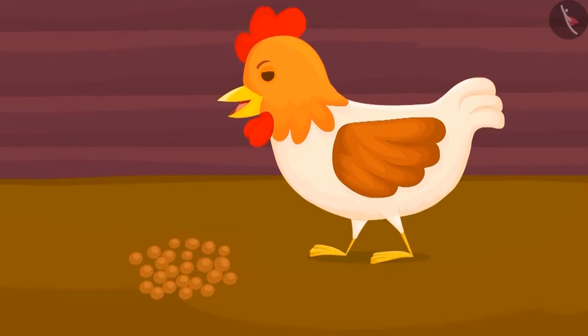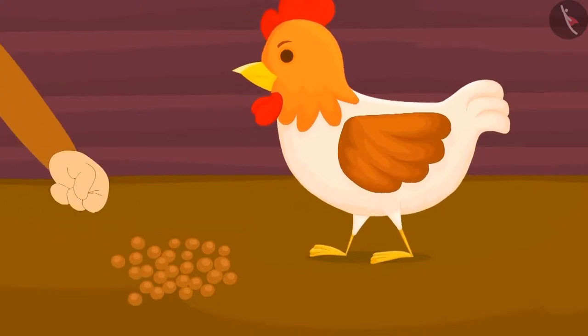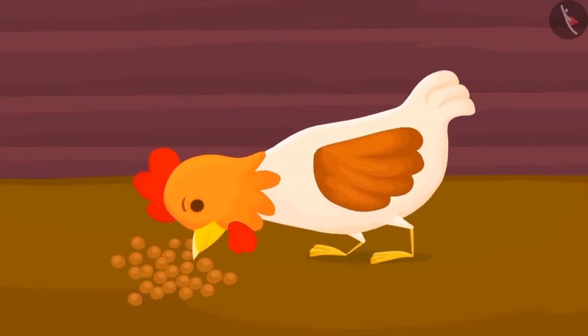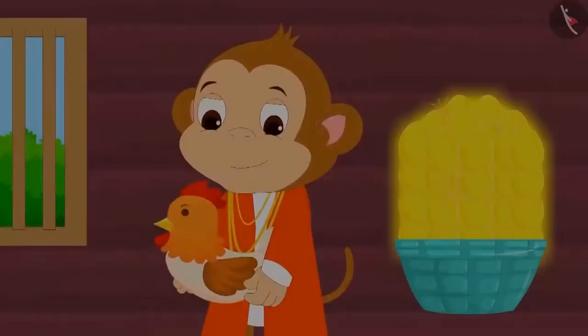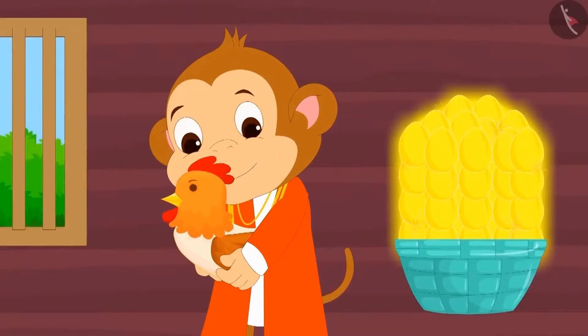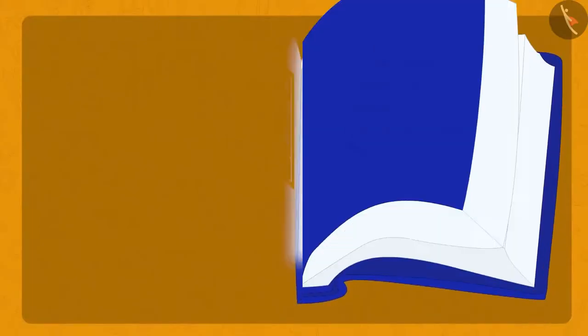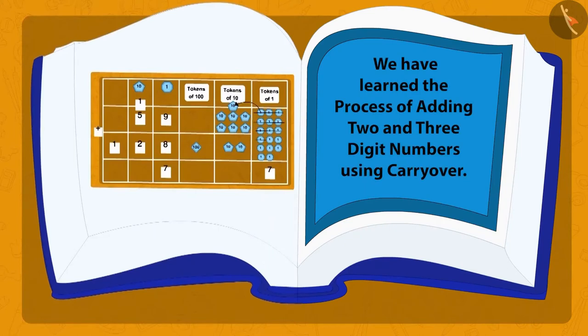Baban now started feeding his hen with fodder. And the hen kept giving him more golden eggs. After all, Baban became the richest man in the village. Children, in this lesson, we have learned the method of adding two and three-digit numbers using the carryover method.